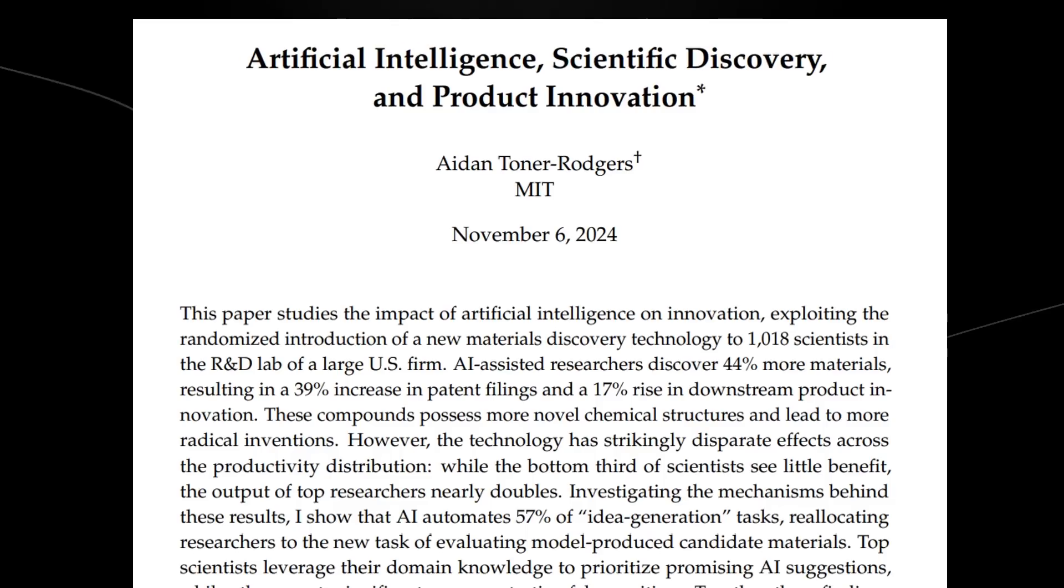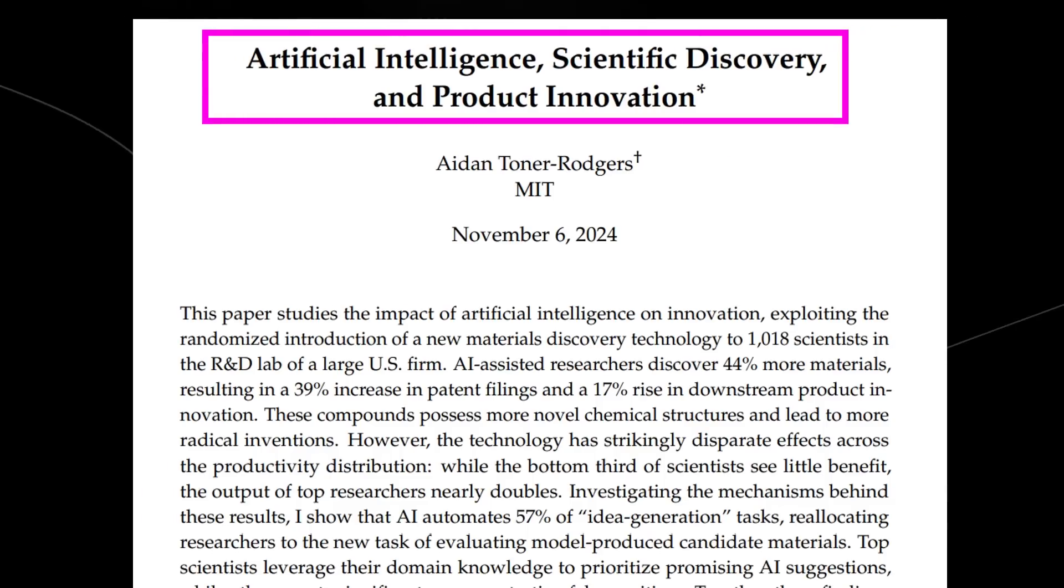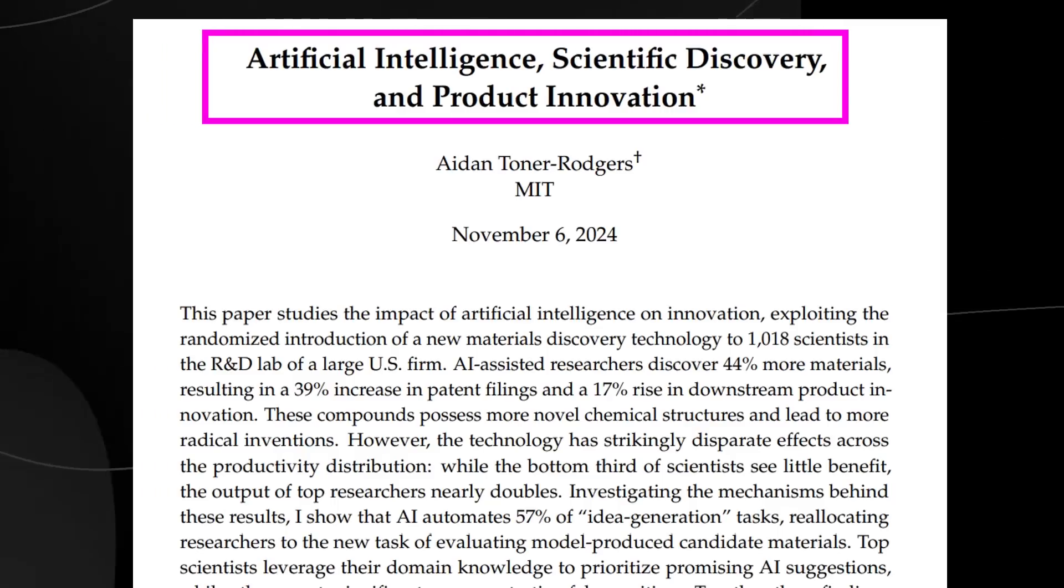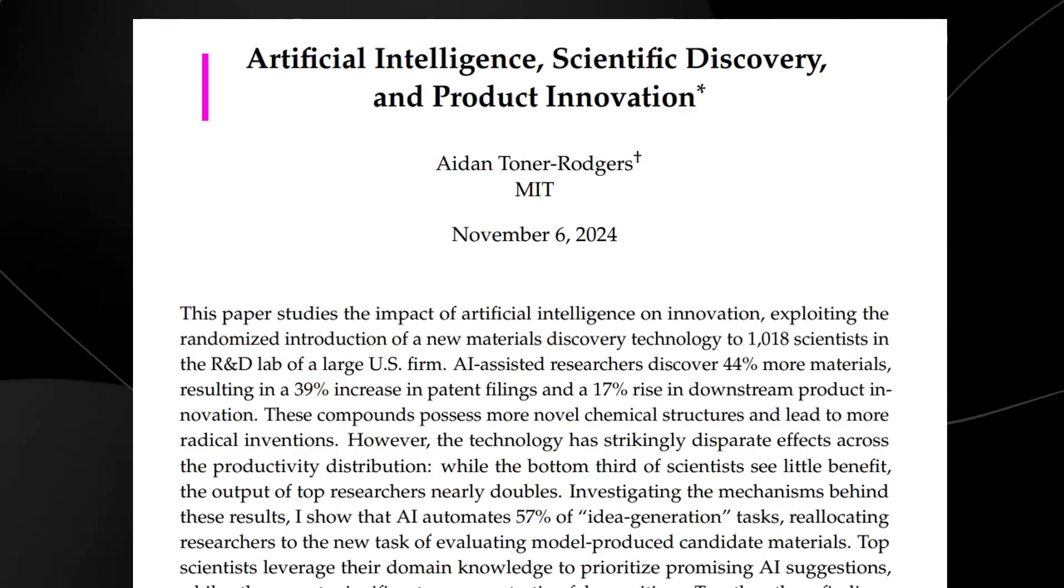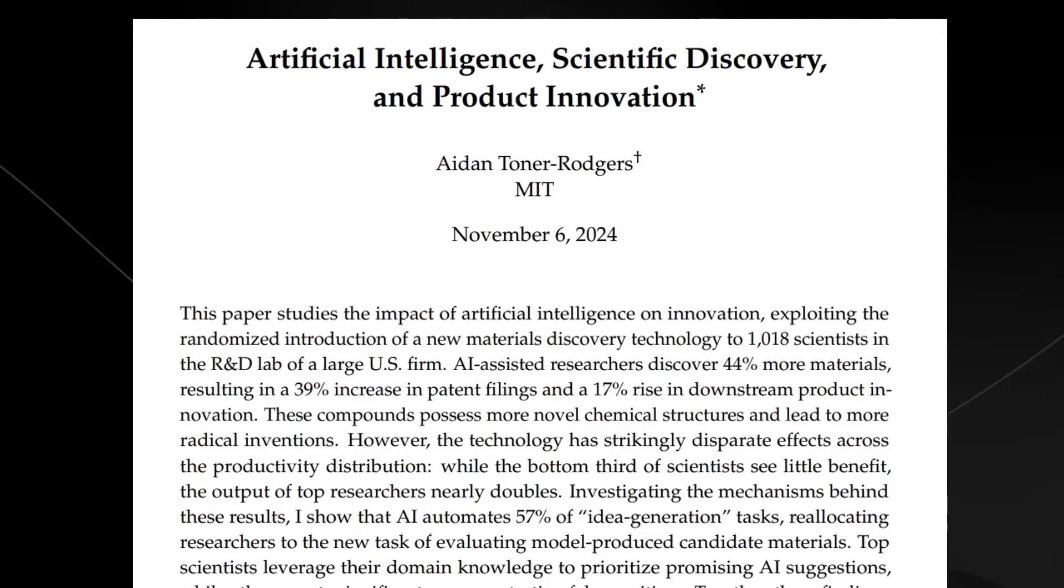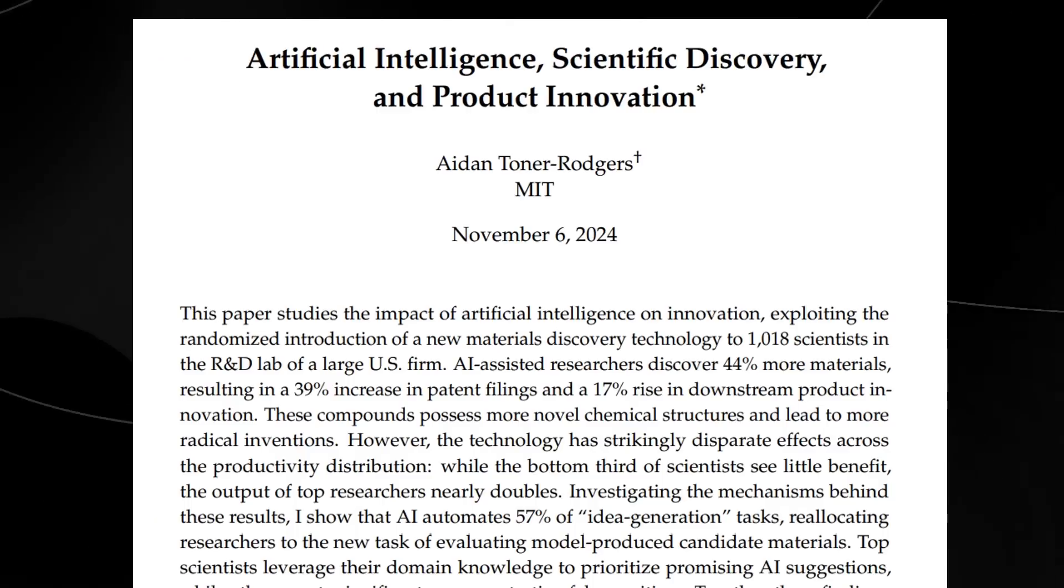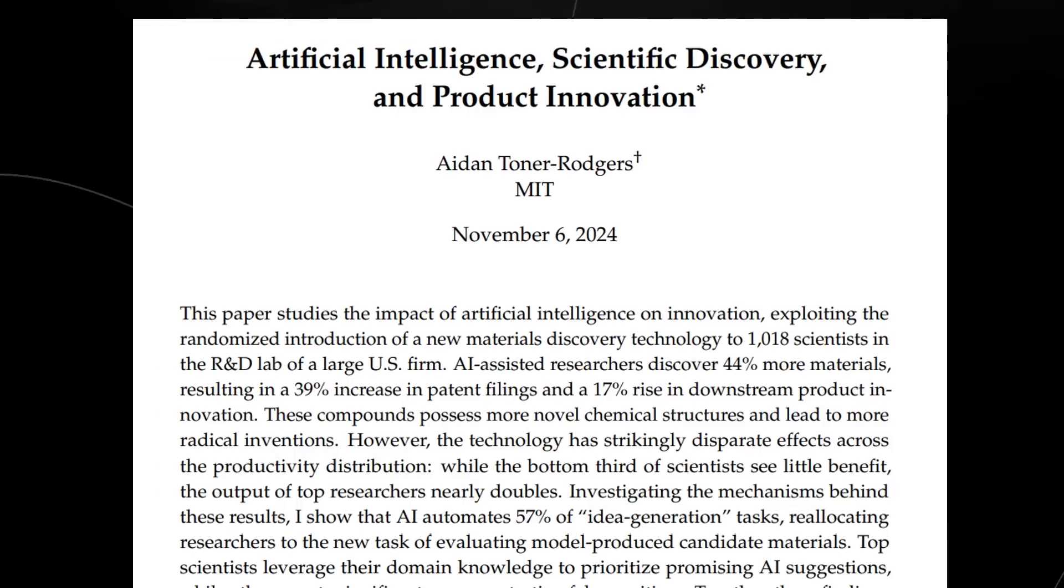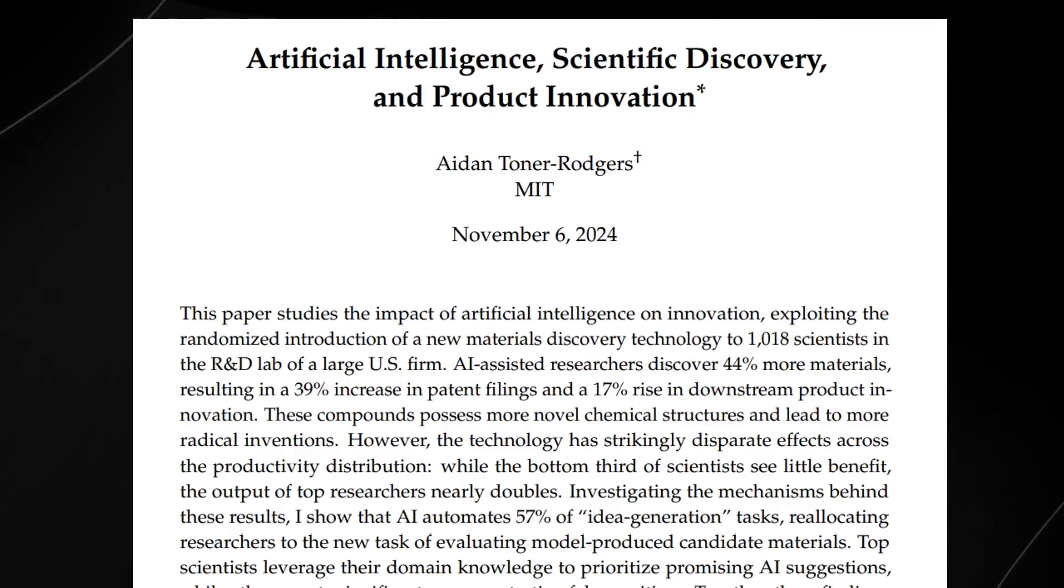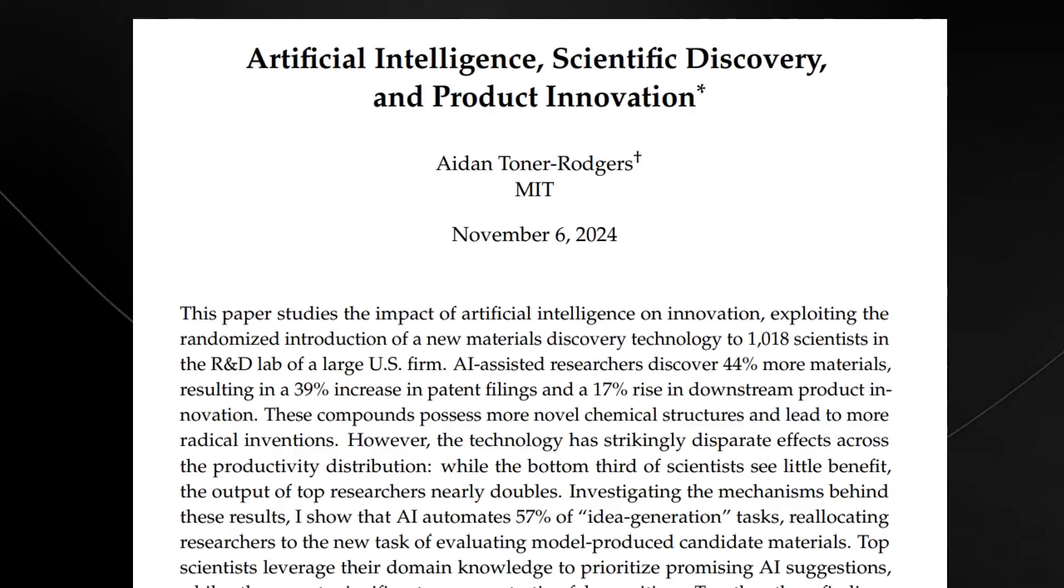Recently, we had this research from MIT come out on artificial intelligence, scientific discovery, and product innovation. Essentially, this paper discusses how crazy artificial intelligence is when it comes to accelerating scientific discovery overall. Sam Altman himself was talking about how when we do have incredible levels of scientific discovery, this is going to lead to a complete transformation in society.